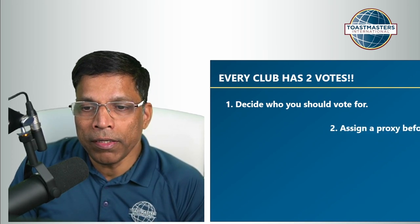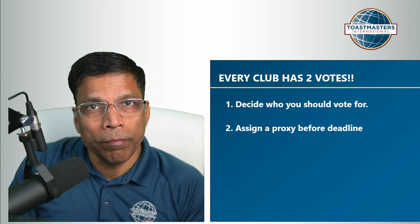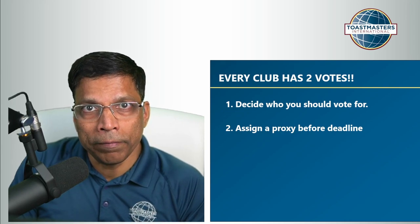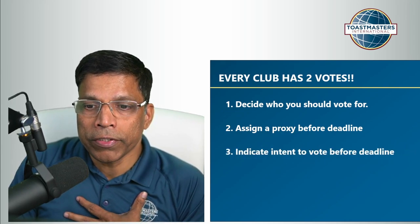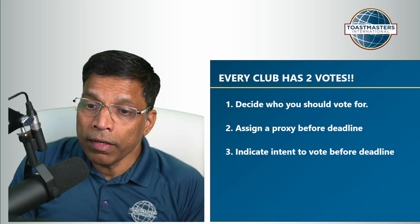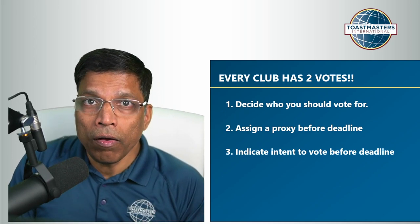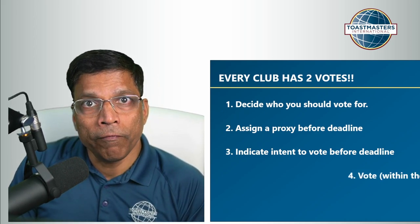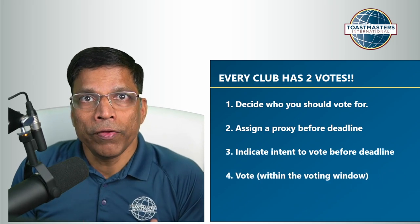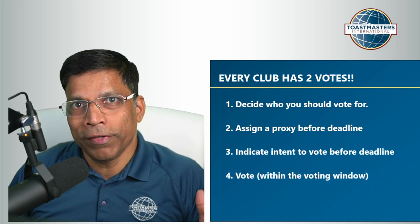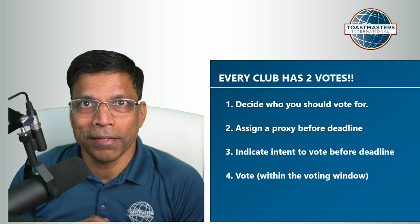Once that decision is made, assign a proxy before the deadline. In case you assign the proxy to yourself, indicate the intent to vote also before the deadline. And finally, vote within the voting window. Let's go through these four steps in detail.